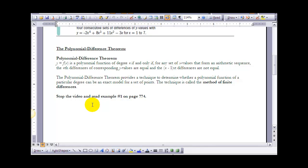The nth differences of the corresponding y values are equal, and the n minus first differences are not equal. So in other words when we looked at the second degree polynomial, the first set of differences were not equal, but the second set were equal. We looked at a third degree polynomial, the second set of differences were not equal, but the third set of differences were equal.